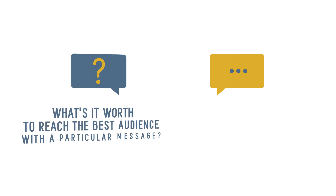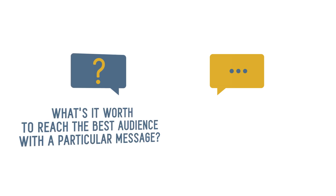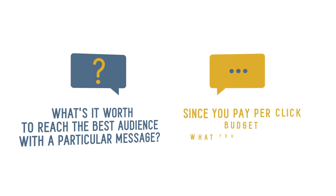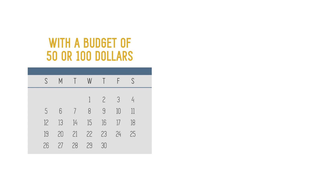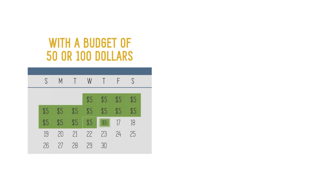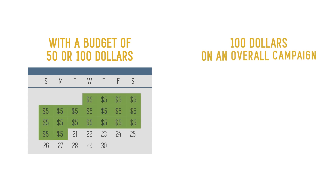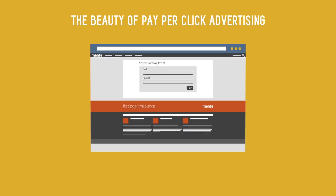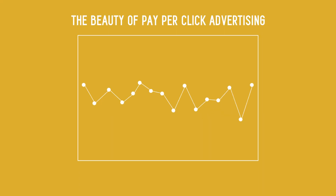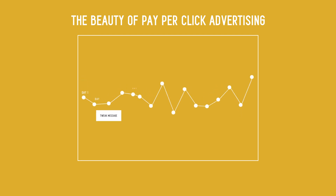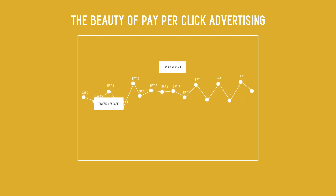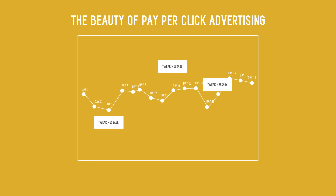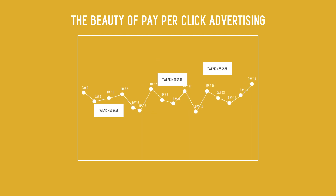People often ask, what's it worth to reach the best audience with a particular message? Well, since you pay-per-click, budget what you can afford. With a budget of $50 or $100, you may choose to spend $5 per day or spend $100 on an overall campaign. The beauty of pay-per-click advertising is that when you log in, you can see how much traction your message is getting and tweak it accordingly, changing it altogether if it's ineffective, or increase your budget for successful promotions.